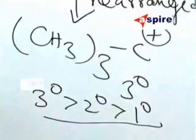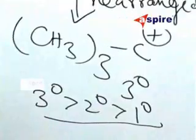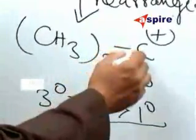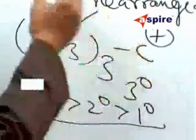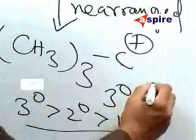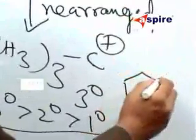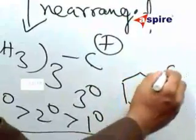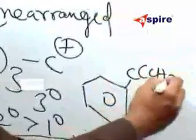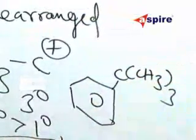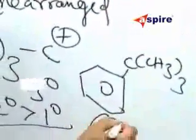Therefore the product you are likely to get will be the attack of this electrophile on benzene. The correct option will be the one that corresponds to this structure. So the correct option will be option 2.